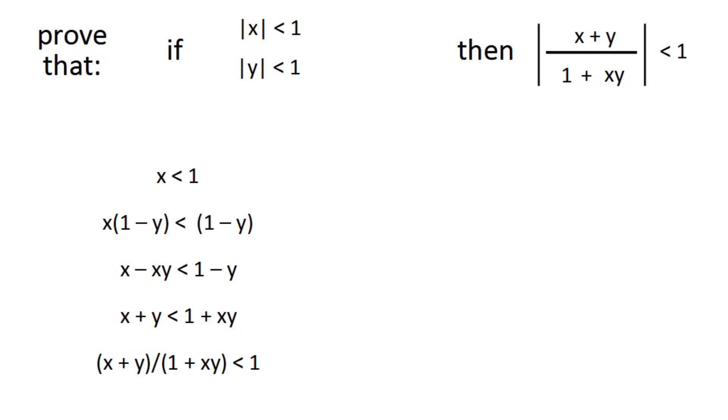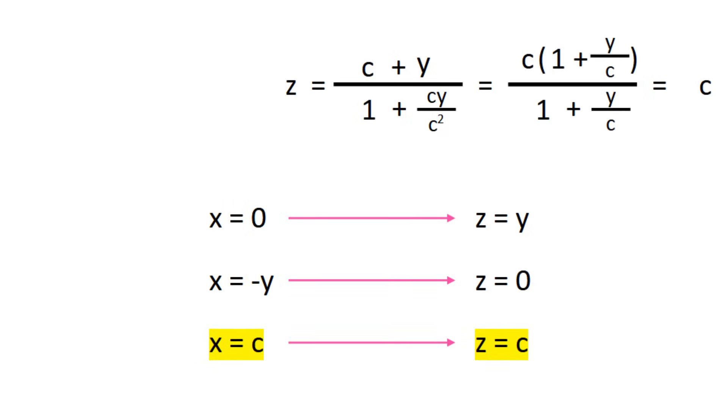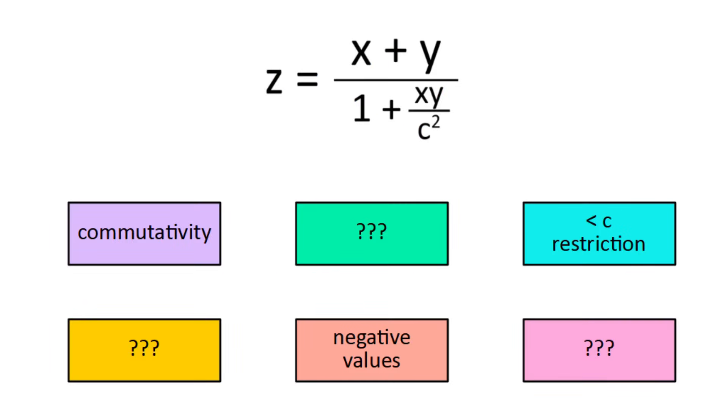For the absolute value, we also have to prove it's greater than negative 1. This process is similar, but we start with x is greater than negative 1, and multiply it by 1 plus y. So what happens if we plug in specific values into the formula? If one value is 0, then the output will just be whatever the other one is, which makes sense. If the two values are the same but in opposite directions, then you get 0, which also makes sense. And if one of the values is c, then you get back c, which is consistent with invariance of c.